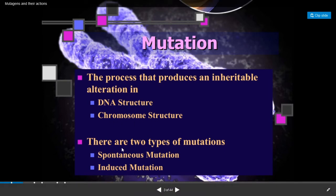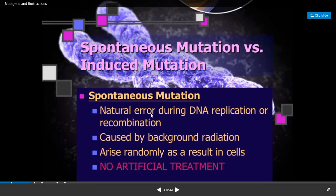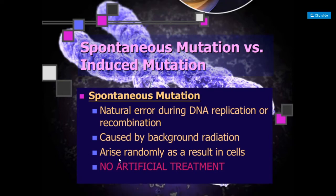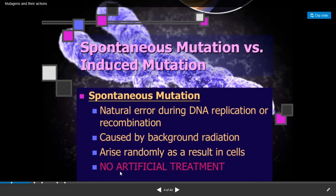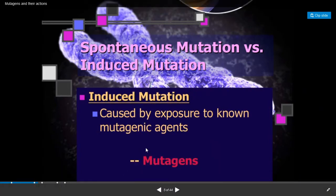There are two types of mutations: spontaneous mutation and induced mutation. Spontaneous mutations occur due to natural errors during DNA replication or recombination. These are caused by background radiations, arise randomly in different cells, and there is no artificial treatment involved — these are mutations taking place naturally.